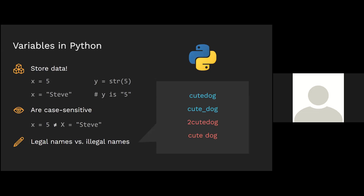We can change types by reassigning the variable — for example, initializing x as the integer five, then changing x to the string 'Steve', overriding the initial value. We can also change the type by casting, which is converting a variable from one type to another — for example, casting y as a string so that five becomes a string and not an integer. Variable names are also case sensitive — lowercase x is not the same as uppercase x. Variable names cannot start with a number or contain a space.